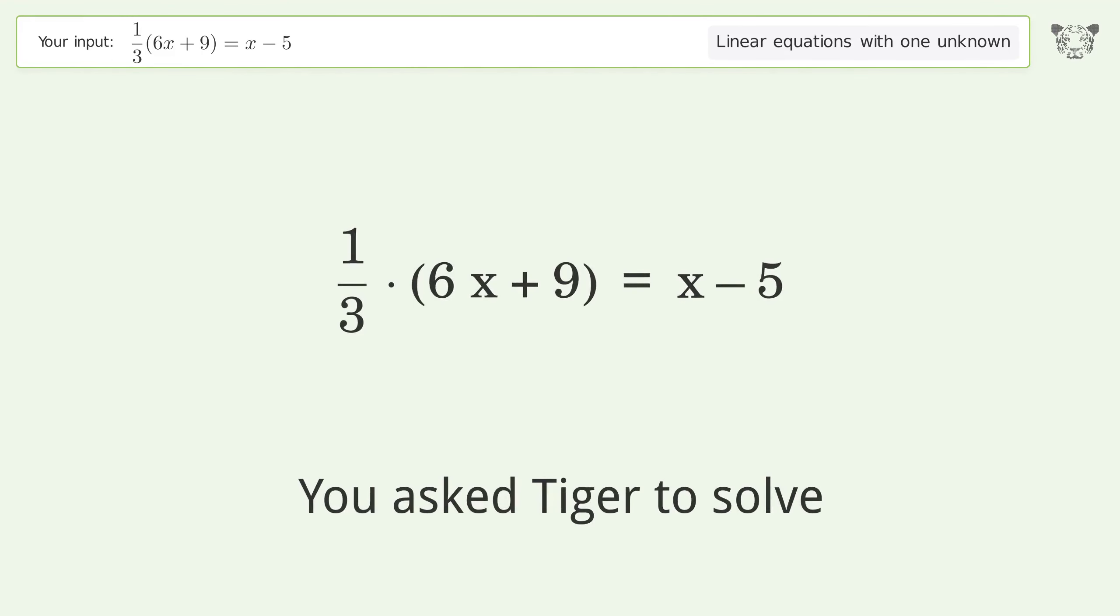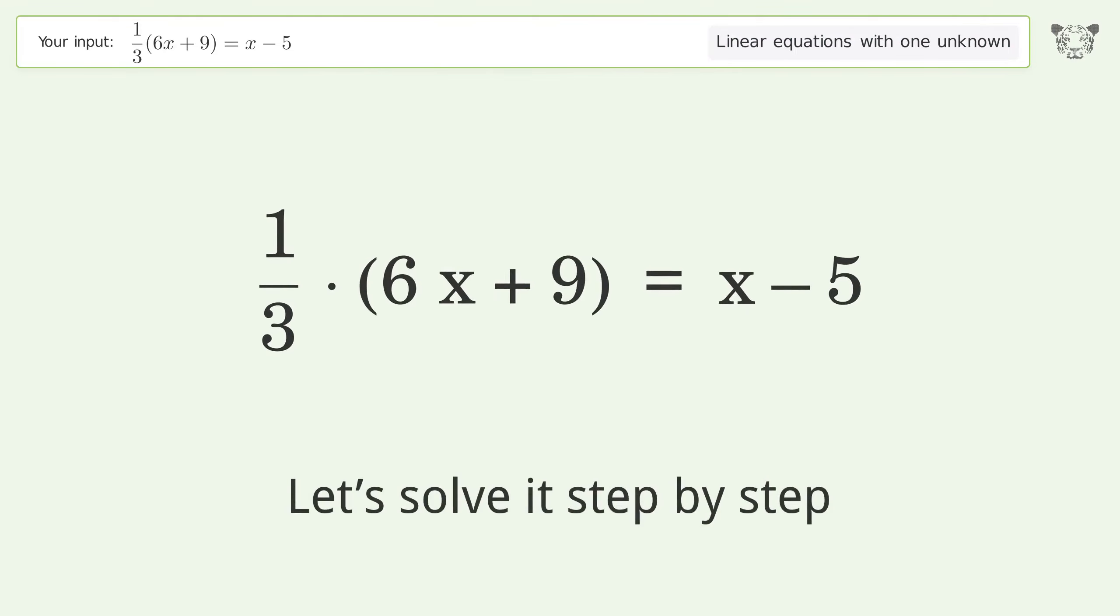You asked Tiger to solve this. This deals with linear equations with one unknown. The final result is x equals negative 8. Let's solve it step by step. Simplify the expression.